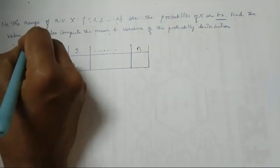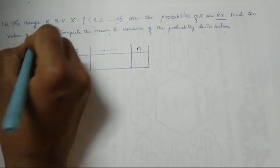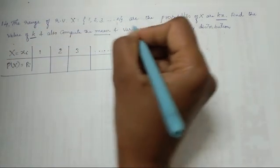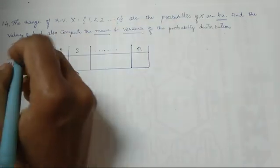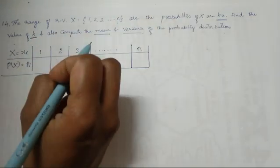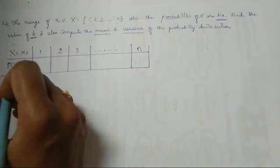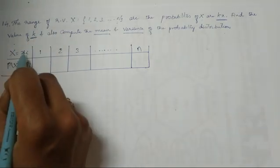From this problem, what we have to find? First, k; then mean; next, variance. To find the value of k, we must have a tabular column of probability distribution. So I have written p(x) = kx.